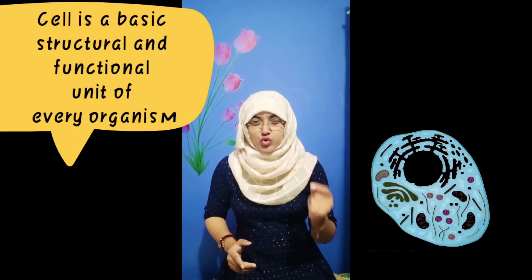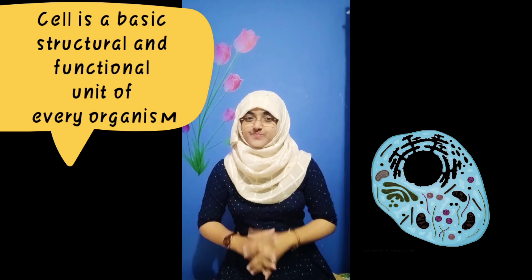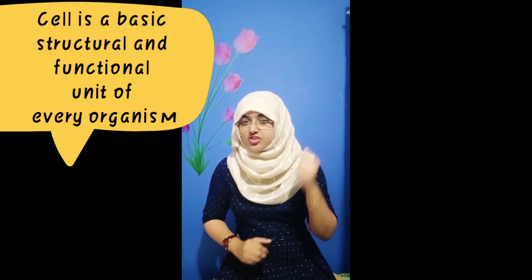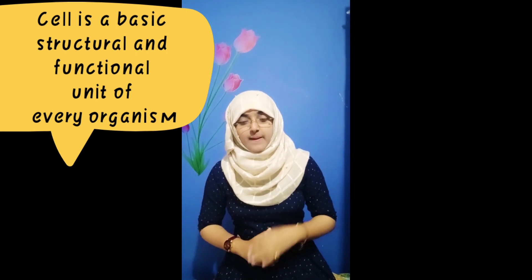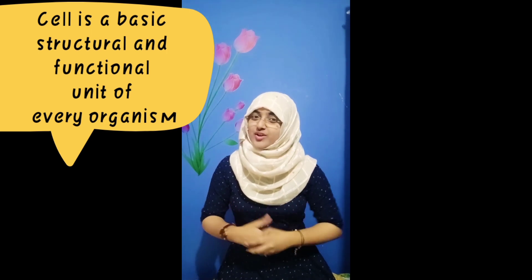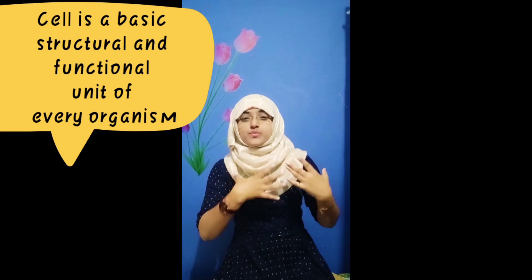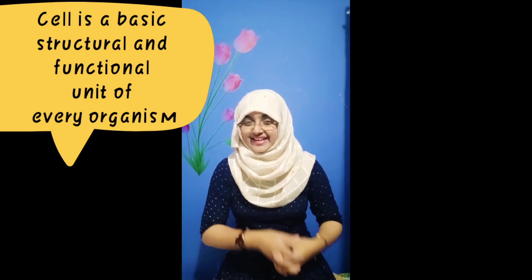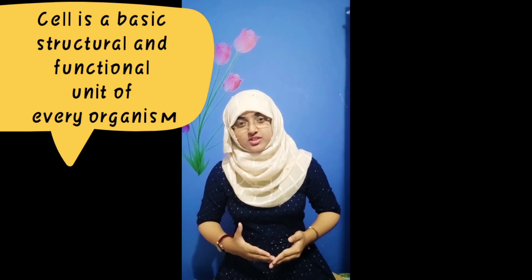Let's take an example of a wall. A wall is made up of bricks. Similarly, we living organisms — the animals, the plants — are all made up of cells. Right from the tip of our hair to the tip of our toe, we are entirely made up of cells. So the cell can be defined as the basic structural and functional unit of every organism. It is called the structural unit because it provides structure to a body, and functional because it performs various functions in a body.